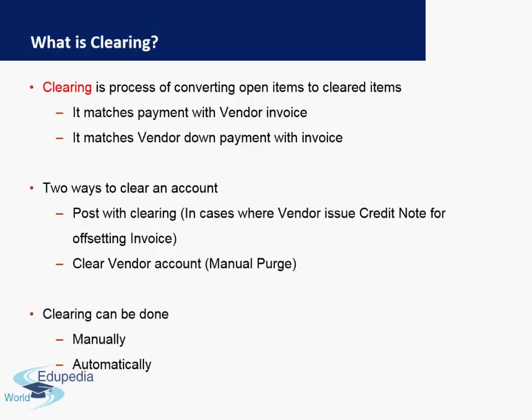Clearing is a process of converting your open items to cleared items. This happens when your payment matches the vendor invoice, or when your payment matches a vendor down payment made earlier. There are two ways to clear an account: one is to post with clearing, which is used when the vendor issues a credit note for the offsetting invoice. The other way is to clear the vendor account by manually purging the account. Clearing can be done either manually or automatically — automatically is when you make an automatic payment in the system, as seen in the previous slides.